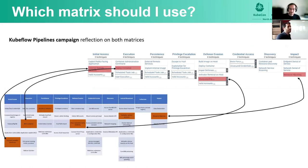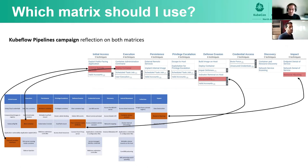Let's recap the attack that Yossi laid out and see how it's reflected in each of the matrices. We can use the mapping to compare techniques. From the initial access tactic, exposed sensitive interface is mapped to external remote service in MITRE's matrix. From the execution tactic, new container is mapped to deploy container on MITRE's side. Container name similarity is mapped to masquerading. And resource hijacking remains the same.